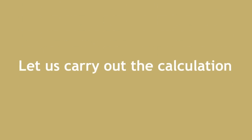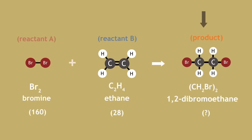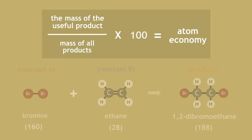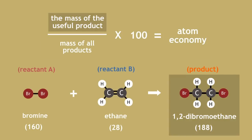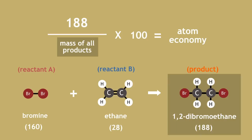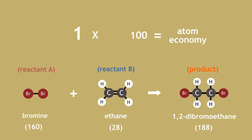Now, let us carry out the calculation. 1,2-dibromoethane has a molecular mass of 188. Look at our equation. The mass of the useful product is 188, divided by the mass of all the products, 188, equals 1, multiplied by 100...